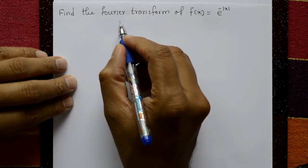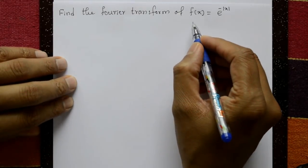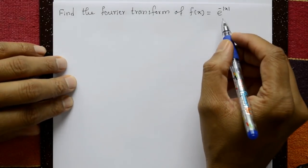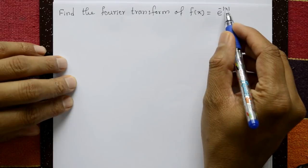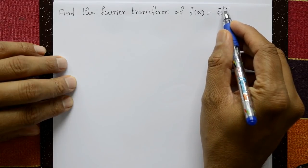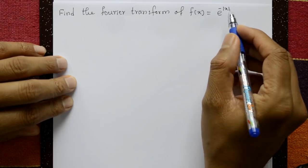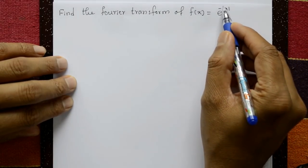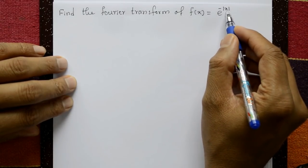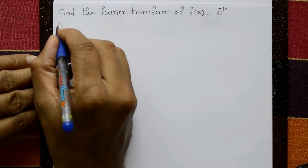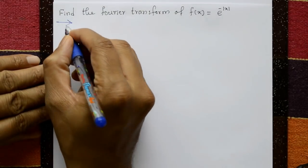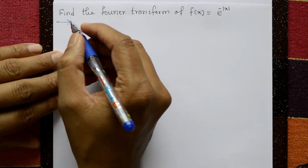Find the Fourier transform of f(x) = e to the power minus modulus of x. This is a mod symbol. Now, solution.